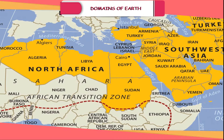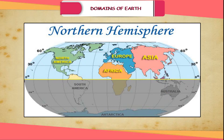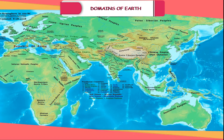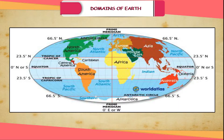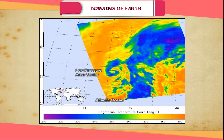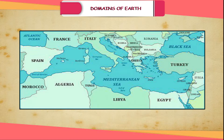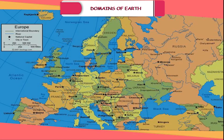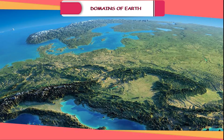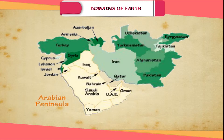Europe lies to the west of Asia and is much smaller than Asia. It lies entirely in the northern hemisphere but extends into both the eastern and the western hemispheres. The Arctic Circle passes through it. On three sides it is surrounded by the Atlantic Ocean, the Mediterranean Sea and the North Sea. Europe is a densely populated continent. No other continent has left its impact on the other continents of the world as Europe has done in the past four centuries. Europe is sometimes called the Peninsula of Asia.